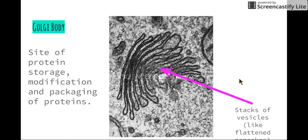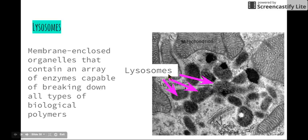The next organelle is the golgi bodies. These are the site of protein storage, modification, and packaging. Once proteins have been created in the ribosomes, they come to the golgi body where they can be modified, and depending on what the cell needs, the golgi body pushes them out in small vesicles. The main part of the golgi body looks like a series of flattened pancakes.